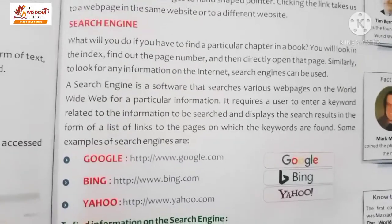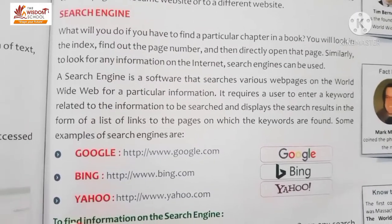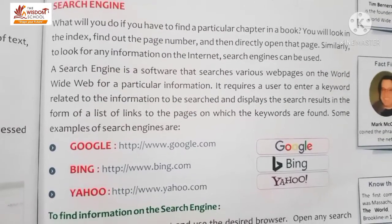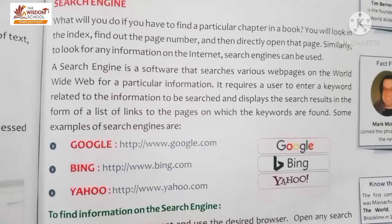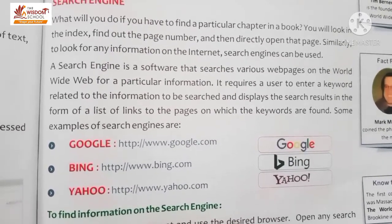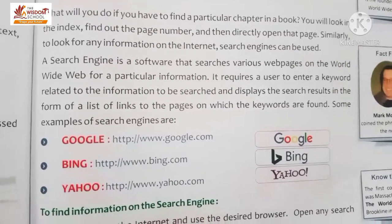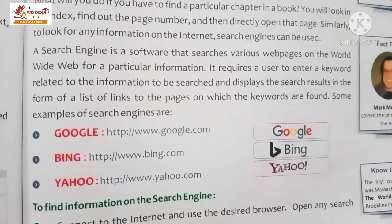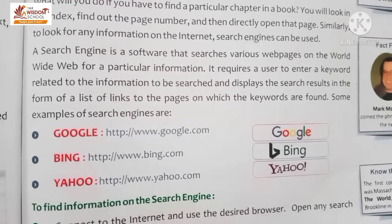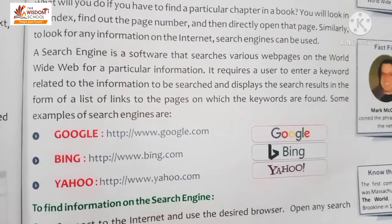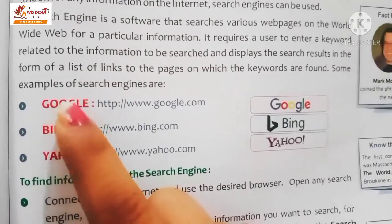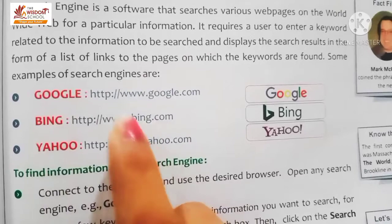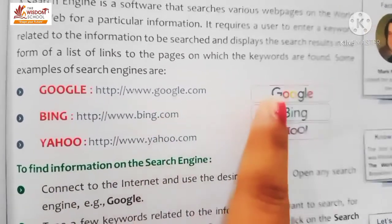Search engine kya hote hai children? Search engine software hote hai jo information ko search kertai hai World Wide Web par. User jis bhi cheez ke baare mein information chahiye, us keyword ko search box mein type kerta hai, aur usse us word se related jo bhi information hai, wo web pages ke form mein show hoti hai. So Google ko open karne ke liye ye link hai, aur ye inki logos hain.